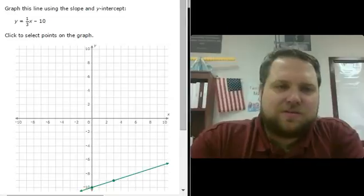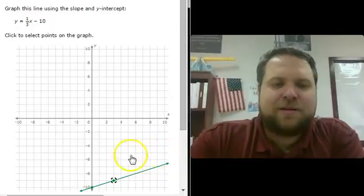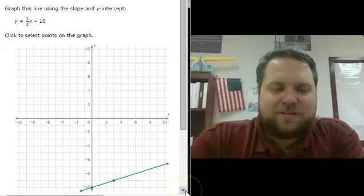Remember that you can use what you know from slope man to determine: this is a positive slope, so the line should be going up. Or if it's a negative slope, it should be going down.